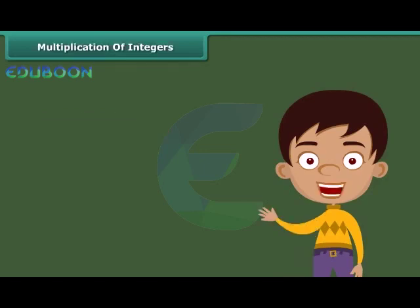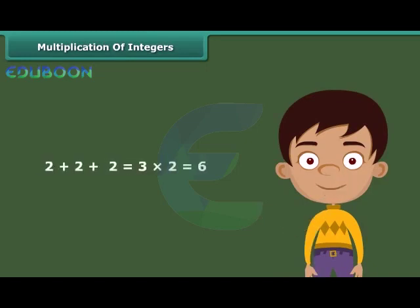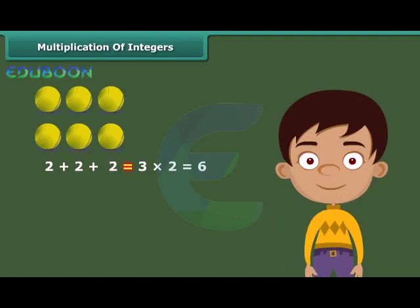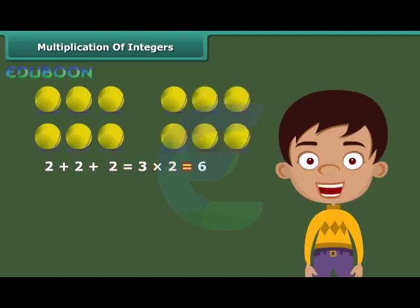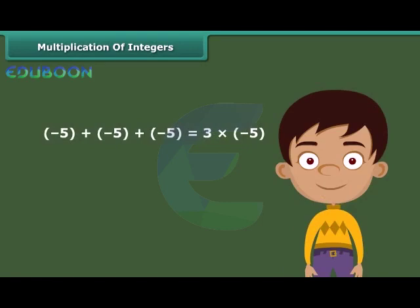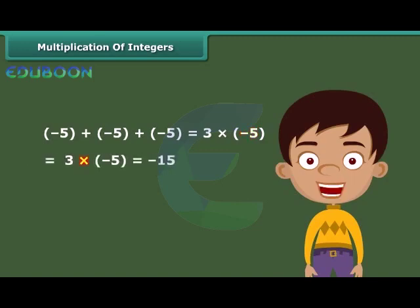We know that multiplication of whole numbers is repeated addition. For example, 2 plus 2 plus 2 is equal to 3 into 2, which equals 6. Similarly, multiplication of integers is also repeated addition. For example, minus 5 plus minus 5 plus minus 5 is equal to 3 into minus 5. Therefore, 3 into minus 5 is equal to minus 15.